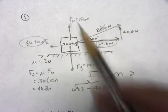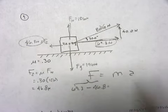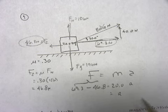This pulls up, this pulls up, these pull down. They cancel, that's why I only use these two. My mass is 20, and my acceleration, I take 69.3 minus 46.8, divide by 20.